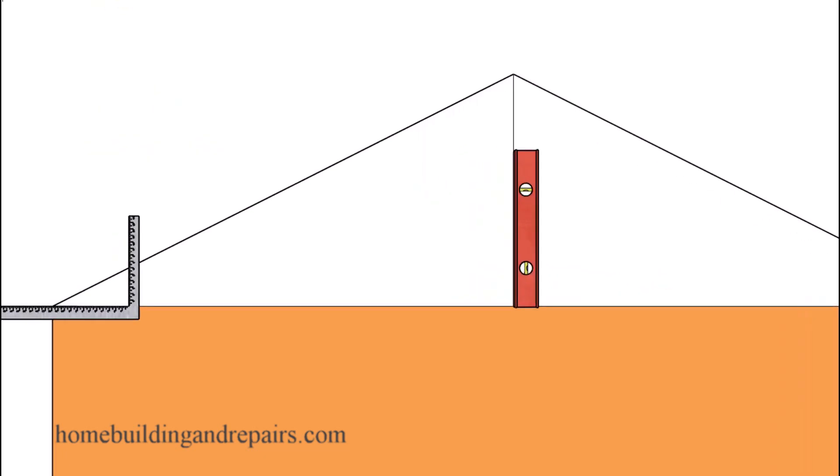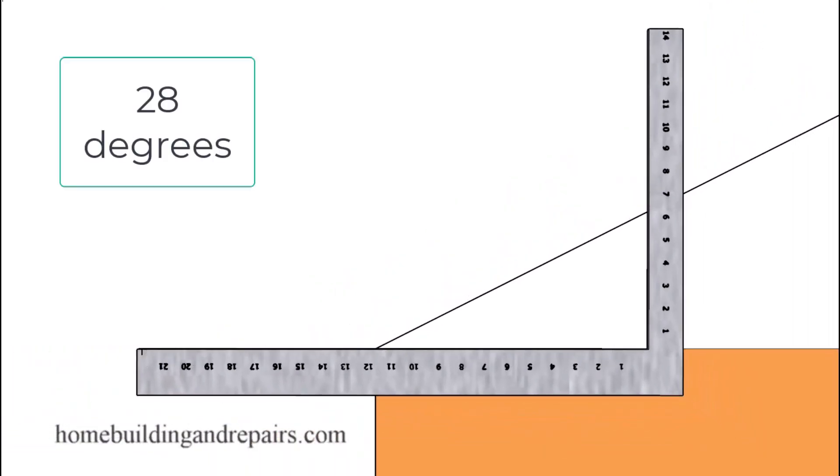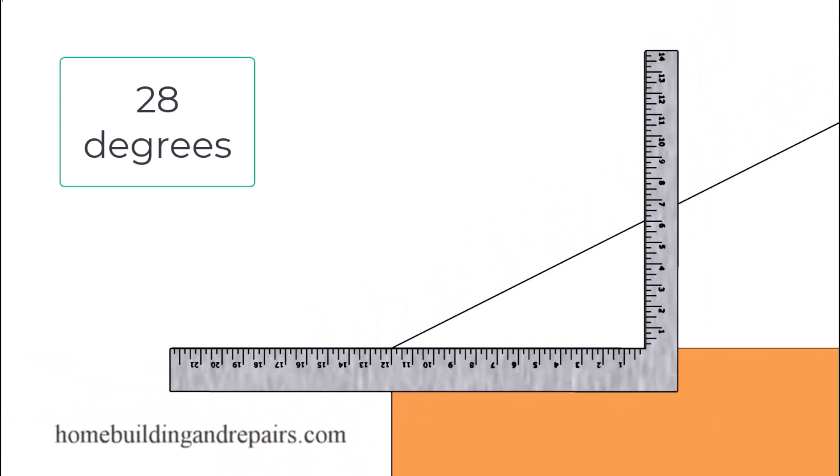And that would look something like this on our framing square where we're going to have a 12 and a 6 lining up on the framing square to create a roof pitch of about 26.6 degrees. Now what if I wanted to create a 28 degree angle for my roof pitch?